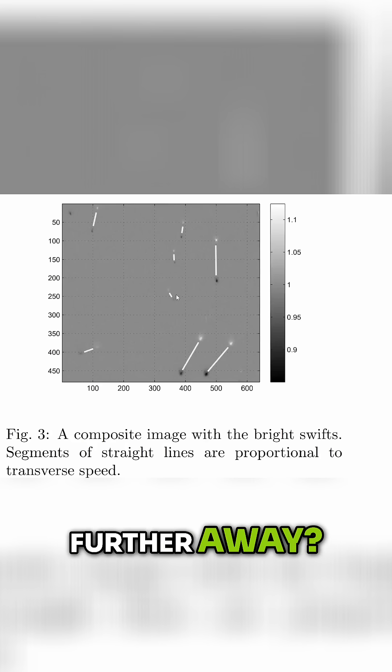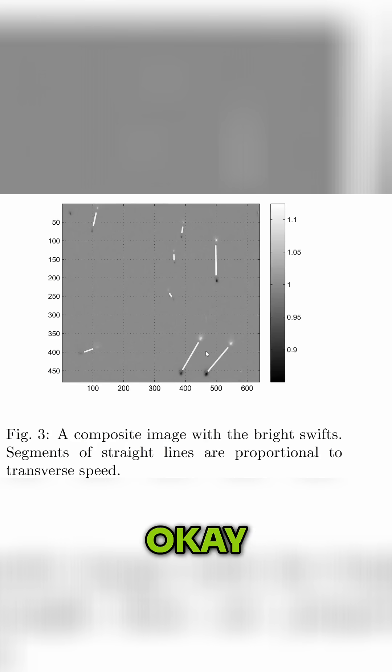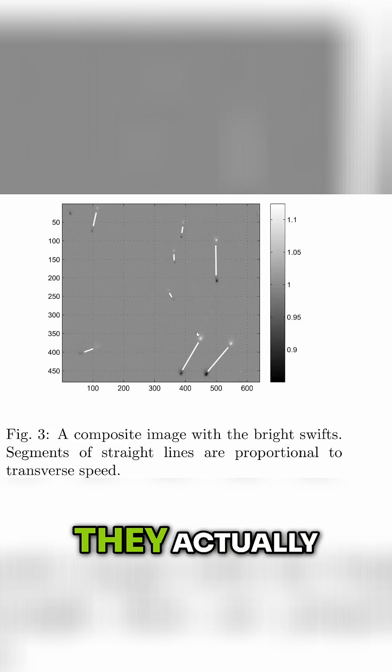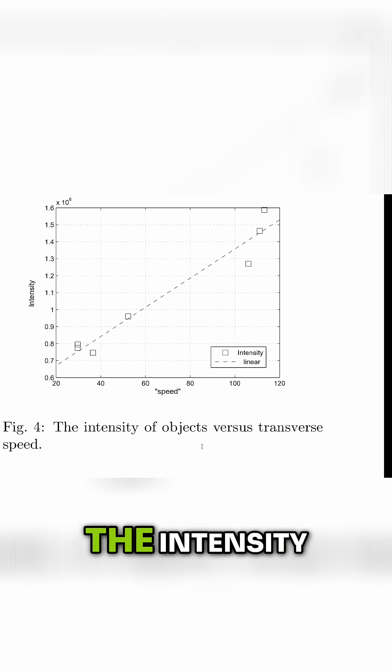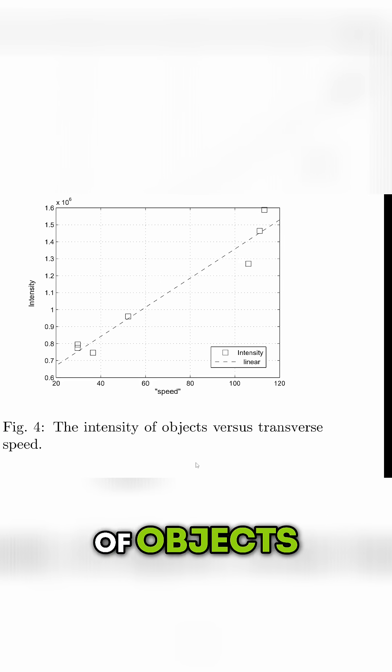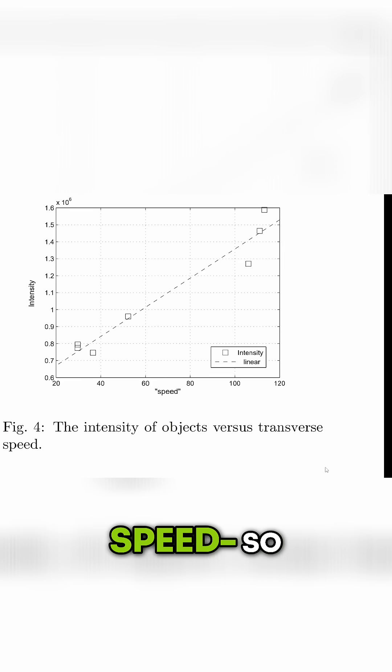Does this mean they're further away, moving the same speed? And these are closer — they actually look larger. The intensity of objects versus transverse speed.